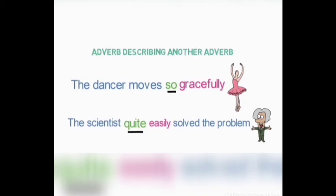Now let's look at examples of adverbs that describe another adverb. 'The dancer moves so gracefully.' Here 'gracefully' describes how the dancer moves, but 'so' is describing the intensity of 'gracefully,' thus describing the adverb. 'The scientist quite easily solved the problem.' Here 'easily' describes the action, so it is an adverb, but 'quite' is used to describe the adverb 'easily.' These are the basics about adverbs that you should know. That's all in this session, thanks for watching.